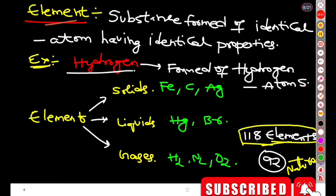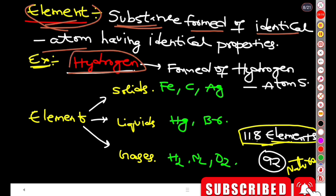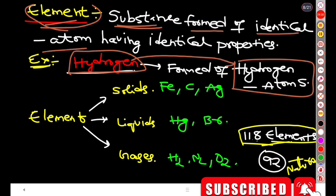The first one is element. What is an element? An element is a substance which is formed of identical atoms. For example, hydrogen is an element — in hydrogen, there are only hydrogen atoms. So hydrogen is formed with identical hydrogen atoms.